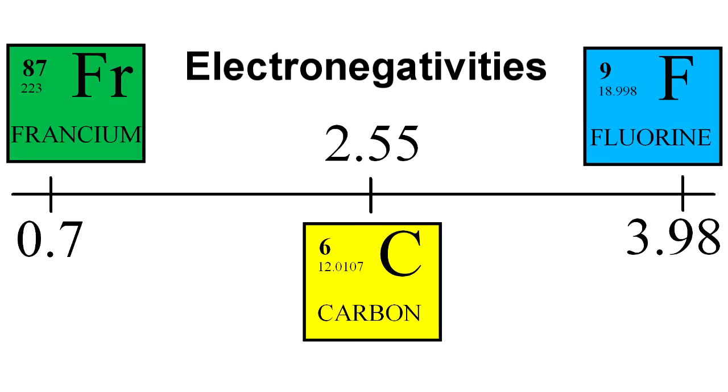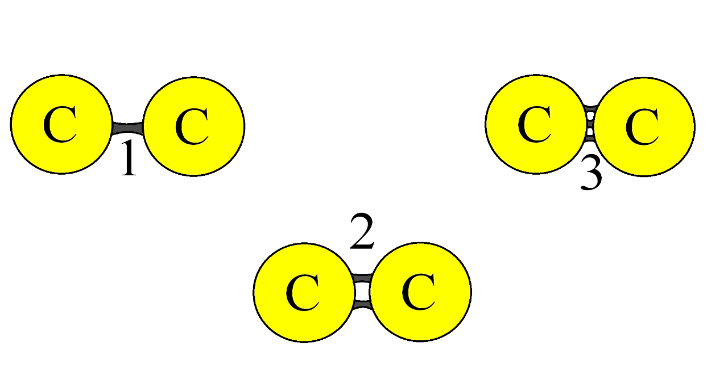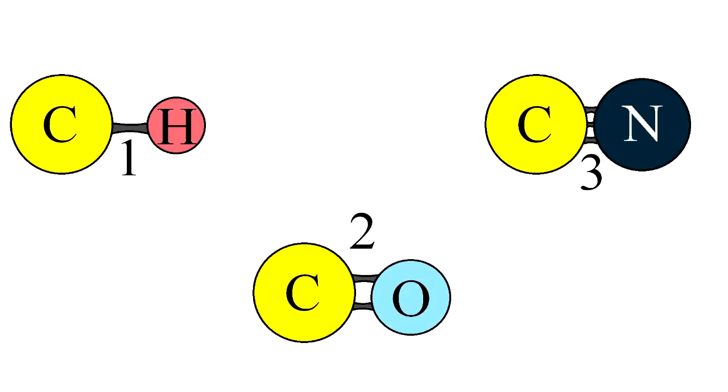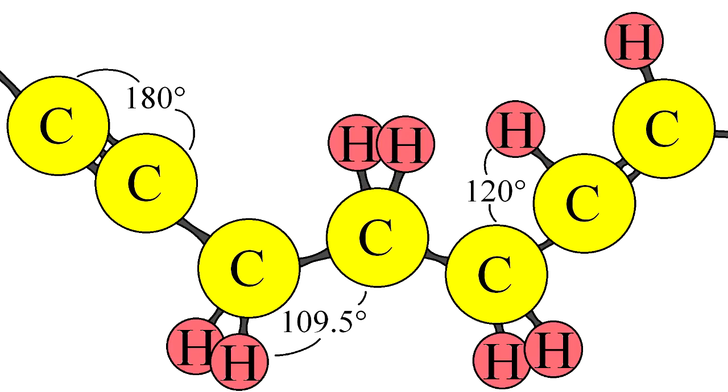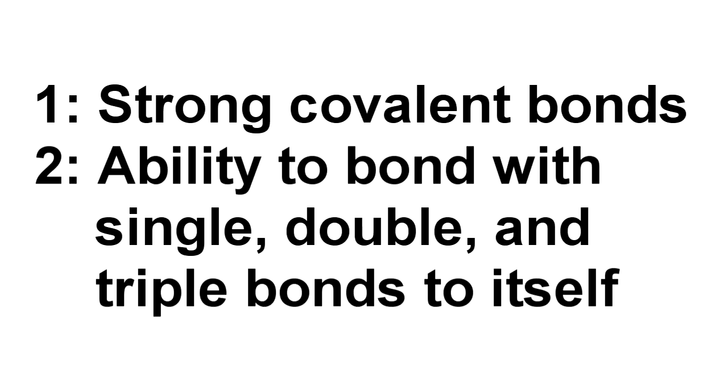Carbon has some important chemical properties that allow it to be so versatile. It has an intermediate electronegativity of 2.55, which allows it to form very strong and stable covalent bonds. With its four valence electrons, carbon can create single, double, or triple bonds to either itself or other atoms such as hydrogen, oxygen, and nitrogen. The stability of carbon and its bonds allow it to form very long chains or rings in a process called catenation.